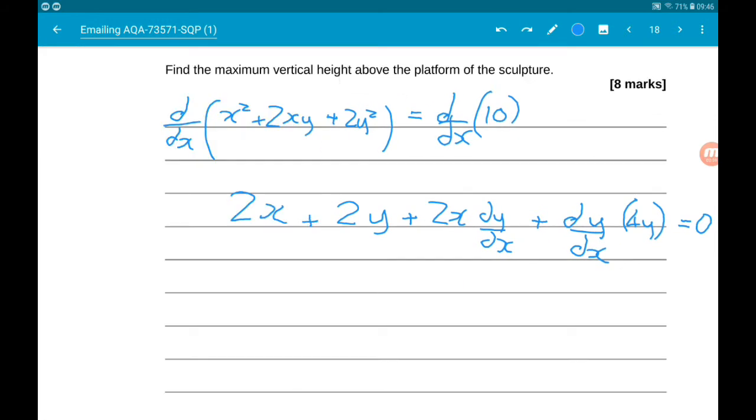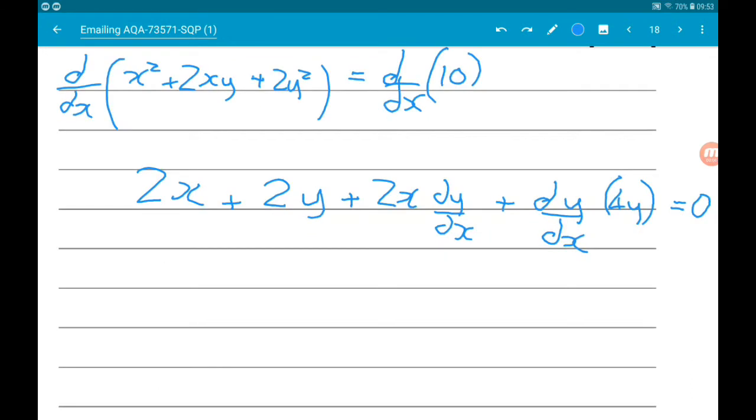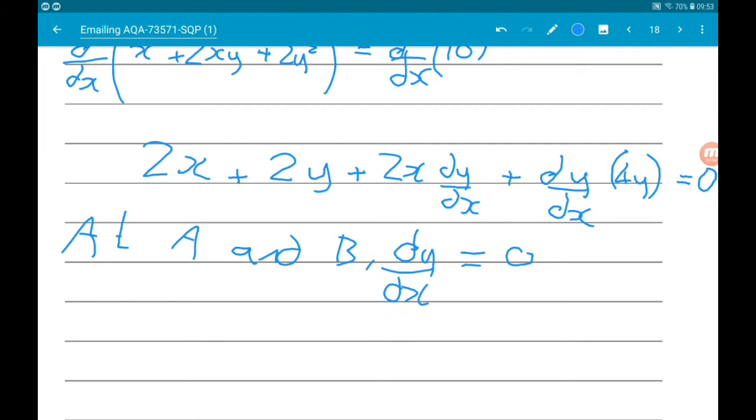Okay so now we need to remember what type of points A and B are. So at A and B, dy/dx is equal to zero because they are stationary points. So if we now substitute dy/dx equals zero into our equation above we're going to be left with 2x plus 2y is equal to zero.